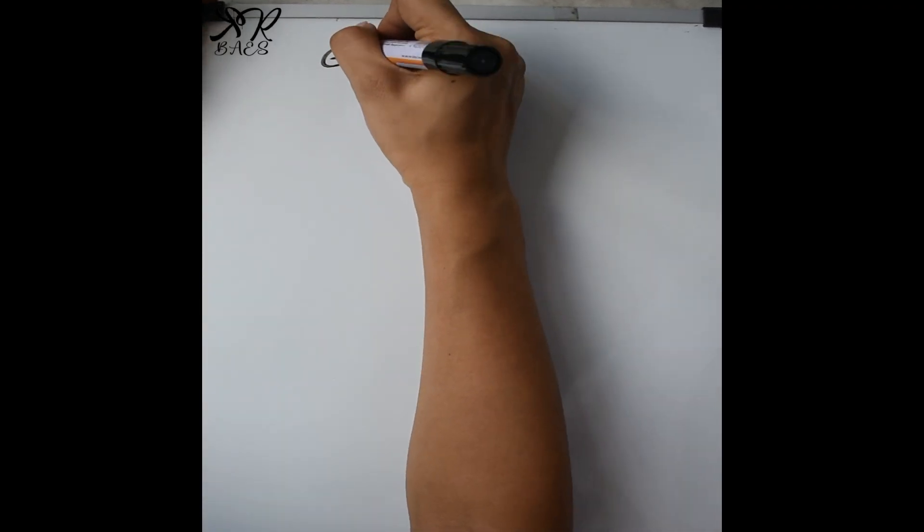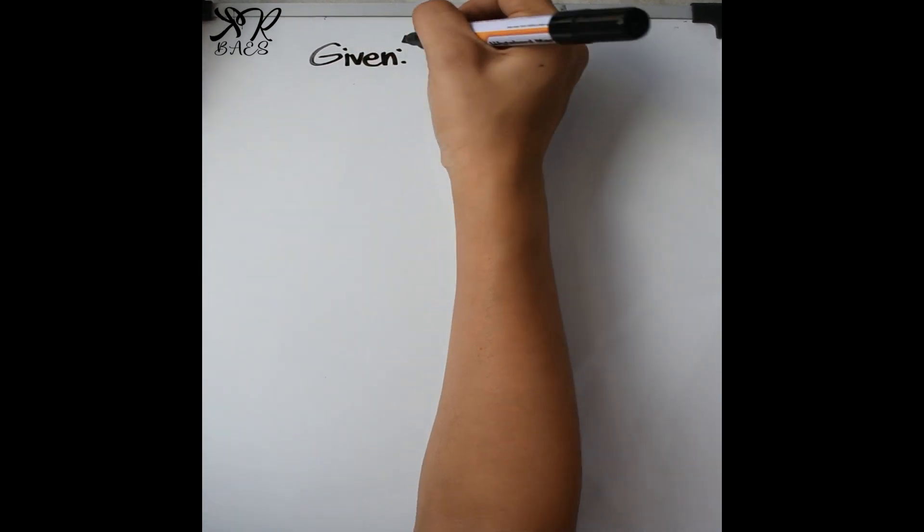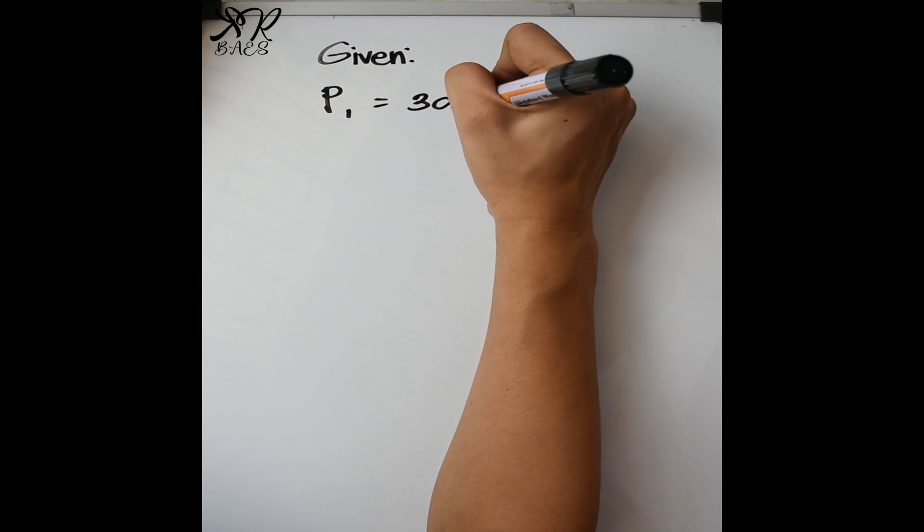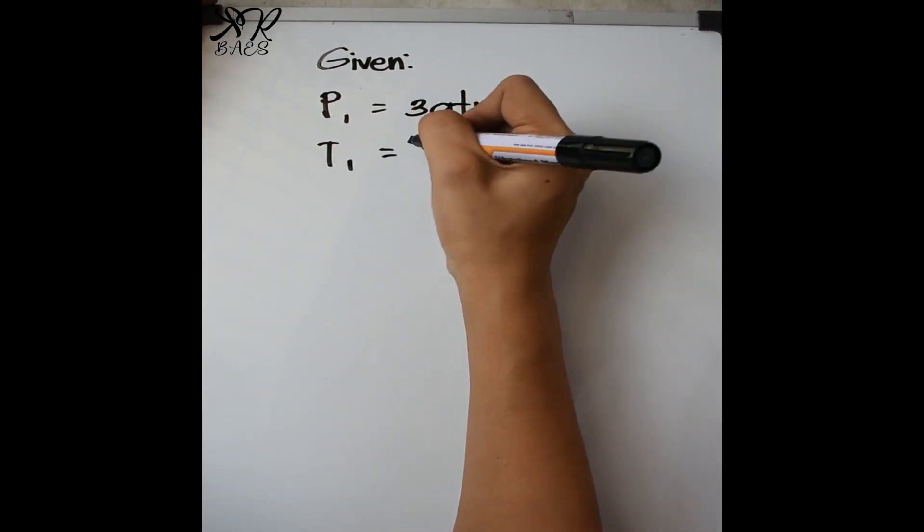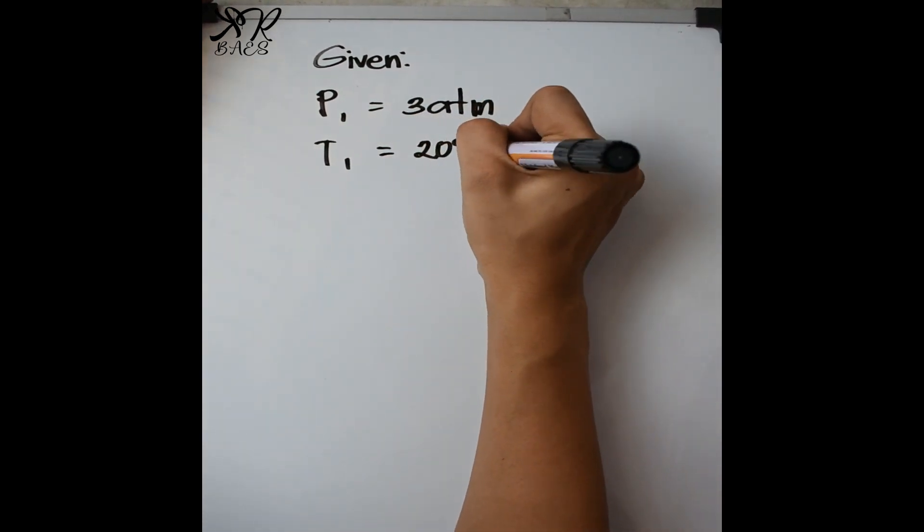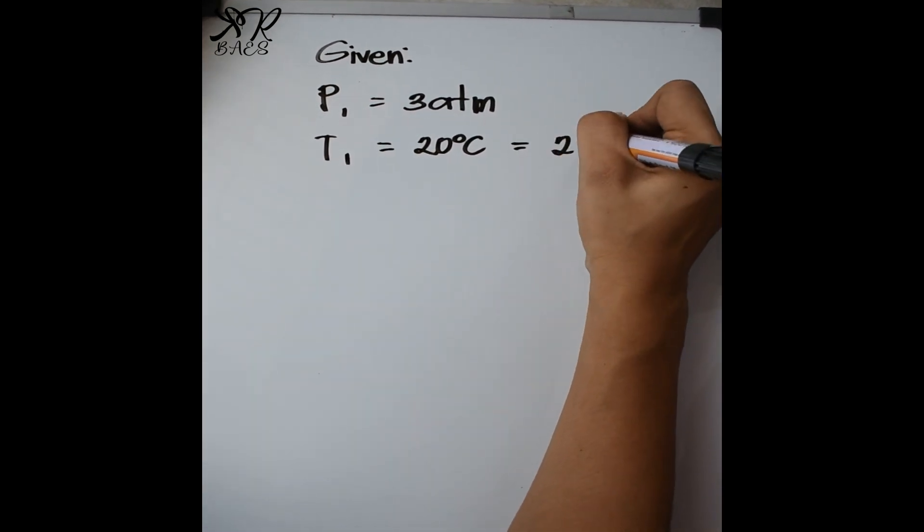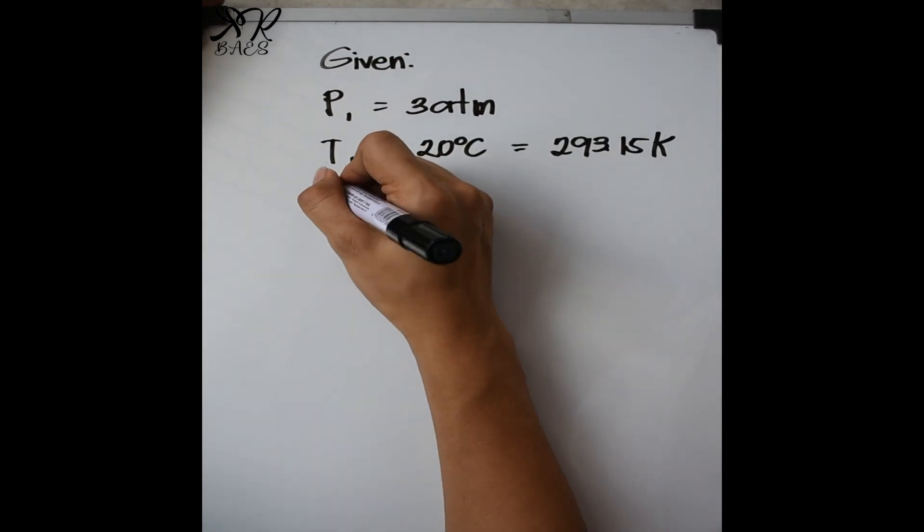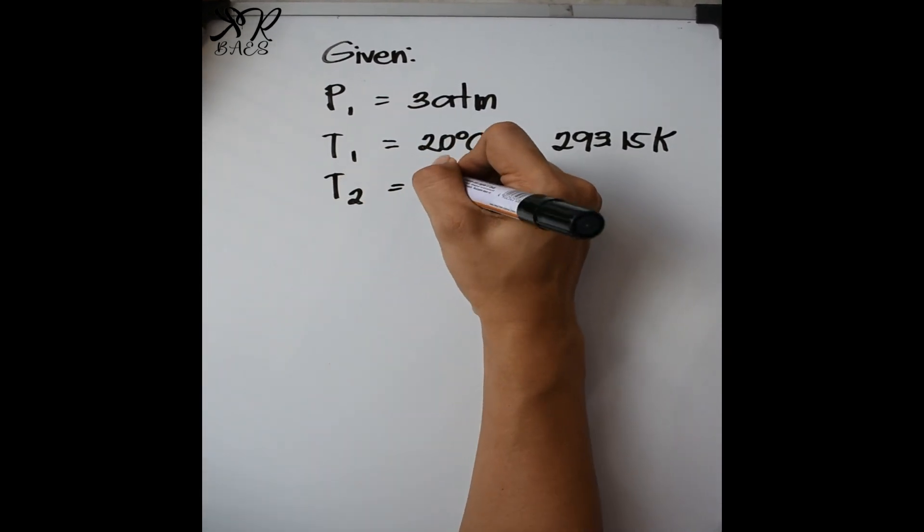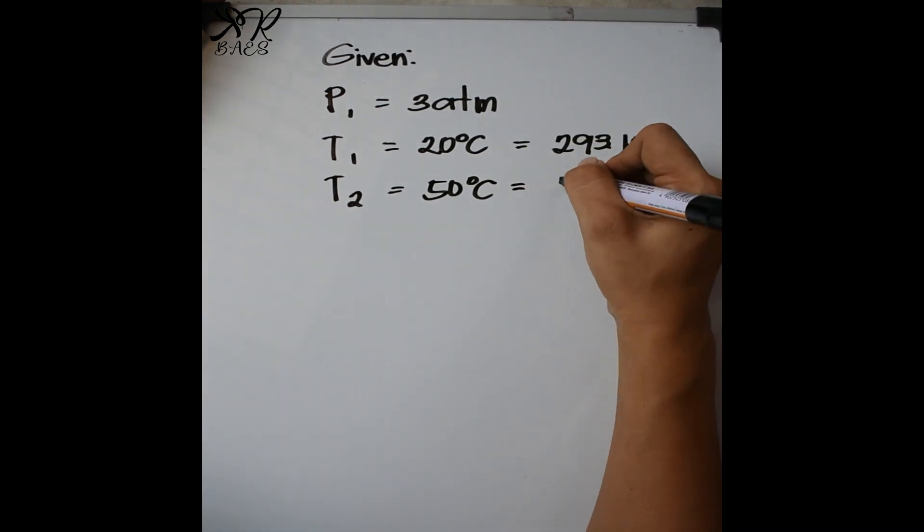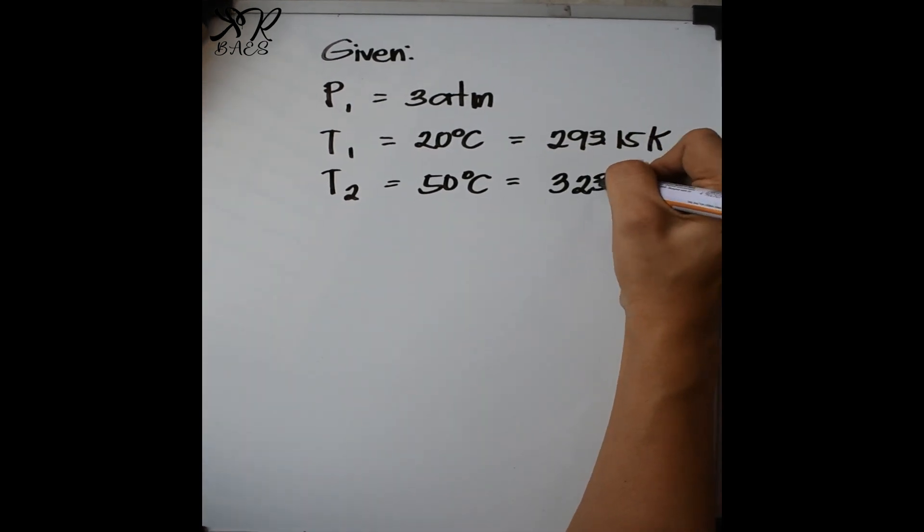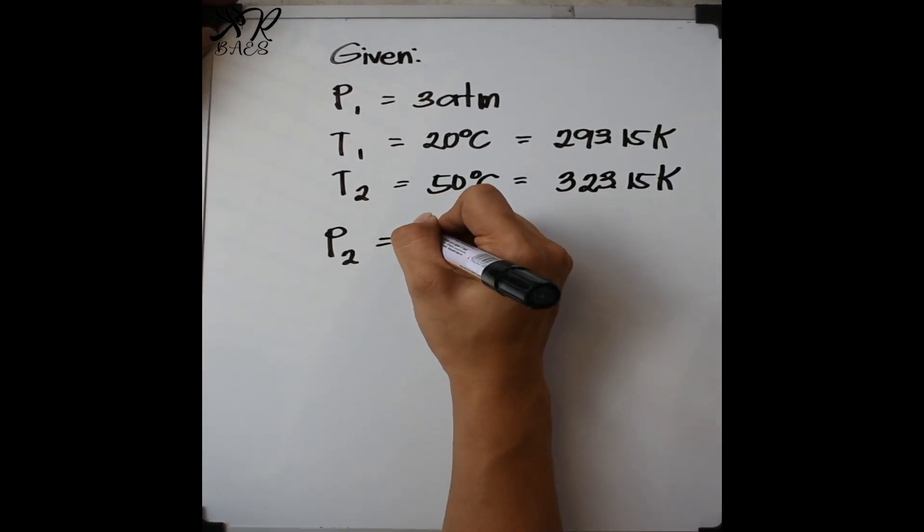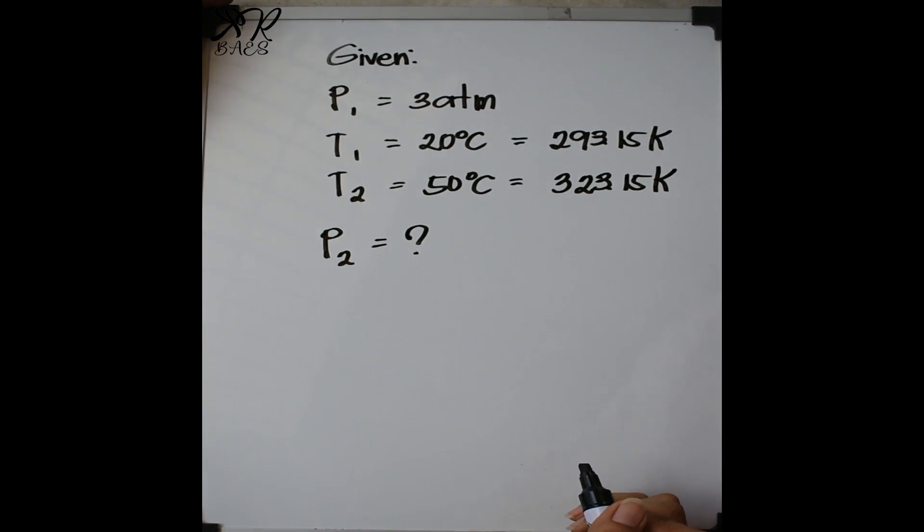So, these are the given. P sub 1 is equal to 3 atmosphere. T sub 1 is equal to 20 degrees Celsius and that is equivalent to 293.15 Kelvin. T sub 2 is equal to 50 degrees Celsius which is 323.15 Kelvin. And we're looking for the P sub 2 or the final pressure.